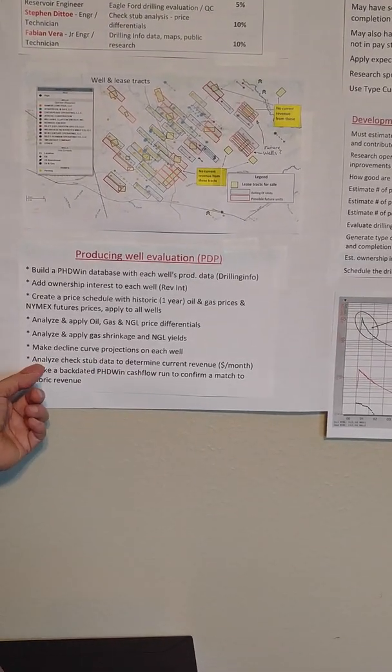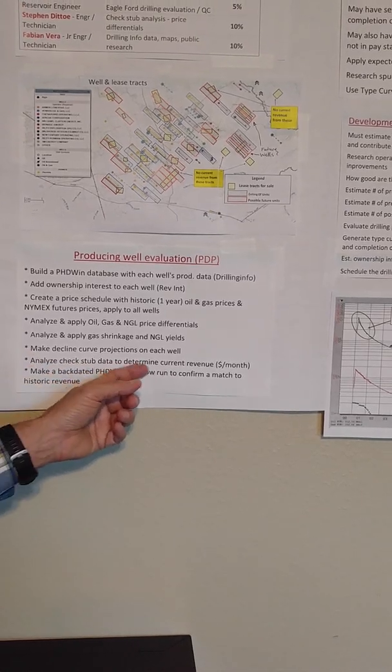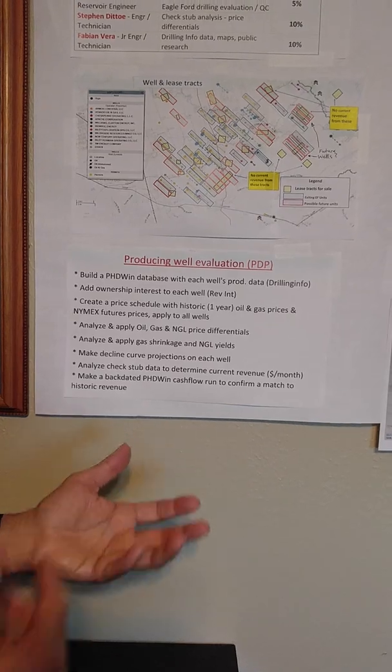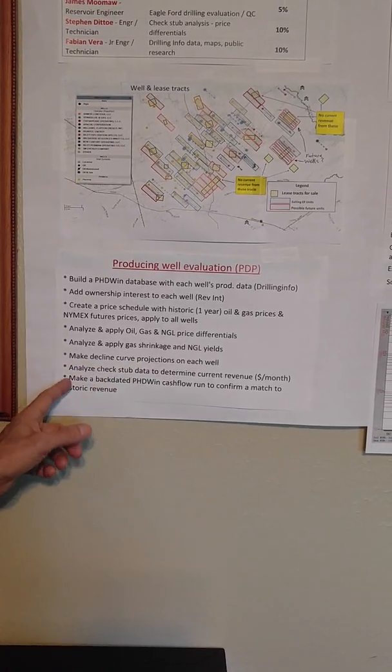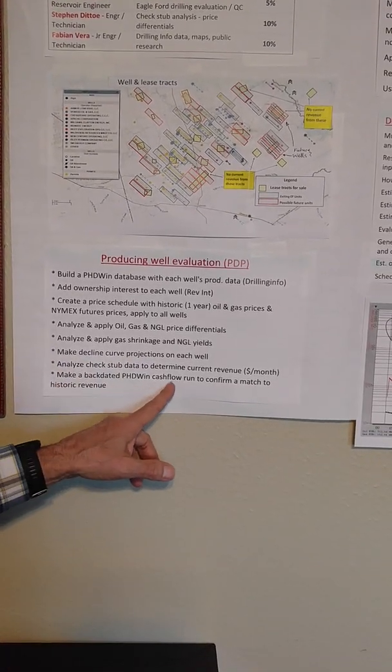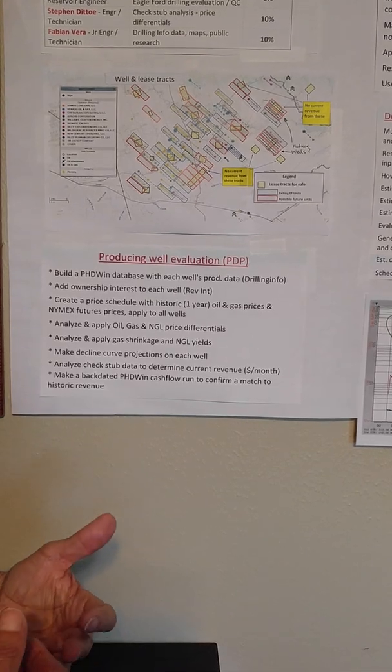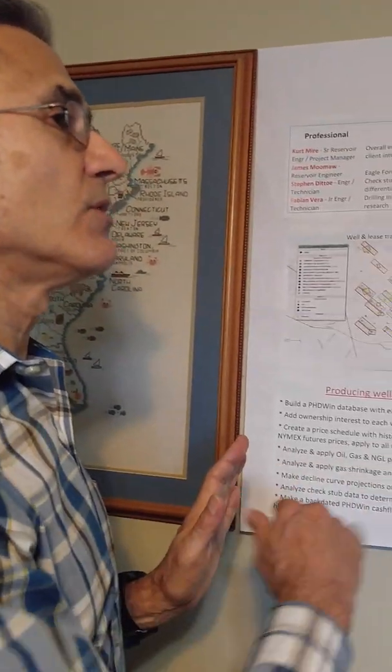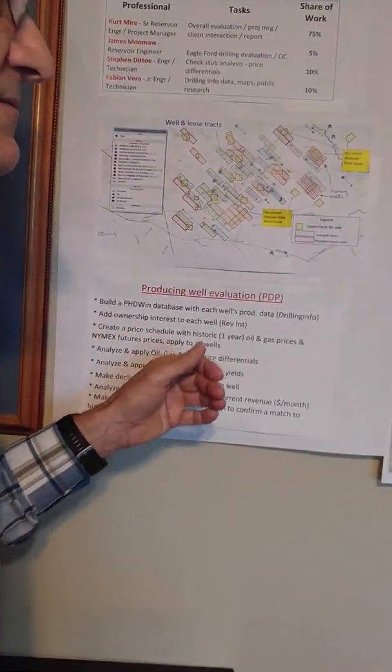Before we get finished with the PDP, we have to analyze the check stub data to determine what revenue the seller is getting—is it thirty thousand a month or what? Then we do a backdated PHDWin cash flow using our database to see if our database will match the actual historical data. If it doesn't, that means we might have a well missing or the wrong ownership on a well. We can fix that up and get this matching, then we're confident that when we do our reserve projections on the PDP, it's good.